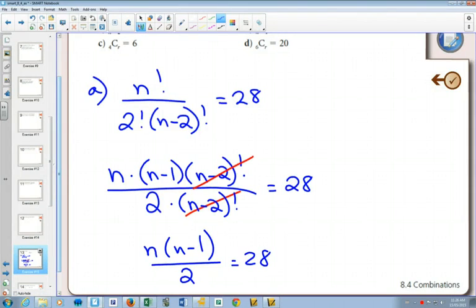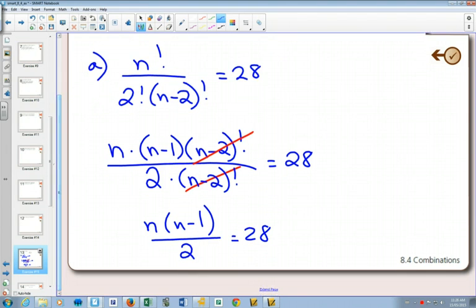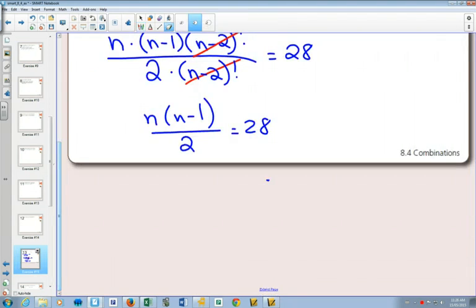What would you like to do next? Multiply both sides by 2. And on this side, if you distribute, you get n squared minus n.